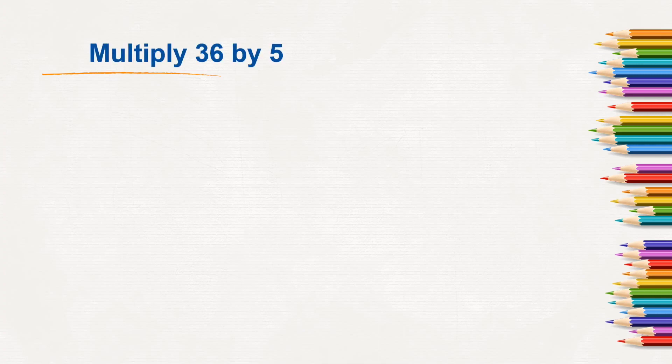Look at one more example here. Here we need to multiply 36 by 5. First we will write it vertically. Always remember we will have to start multiplying with 1s and then move to 10s place.